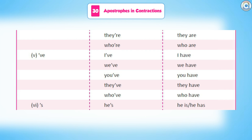Apostrophe + 've' contractions: I've (I have), we've (we have), you've (you have), they've (they have), who've (who have).